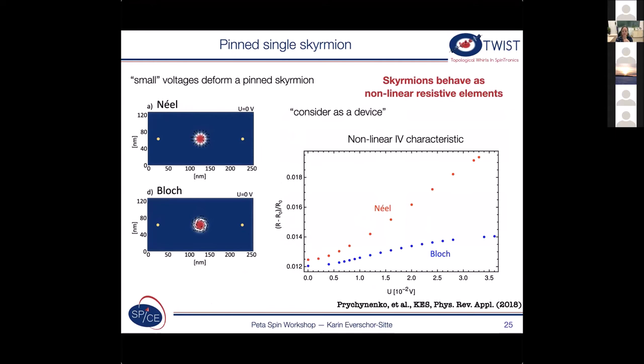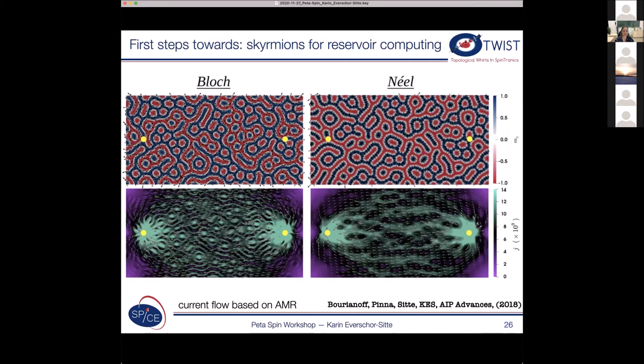And now we want to go, of course, these resistance ratios are very small. So we want to go to more complex structures. So this is what we saw when we just simulated the current pattern. And you see that it nicely follows somehow this magnetic texture. And now we really started to take up a reservoir. So this is our skyrmion reservoir with two voltage contacts.